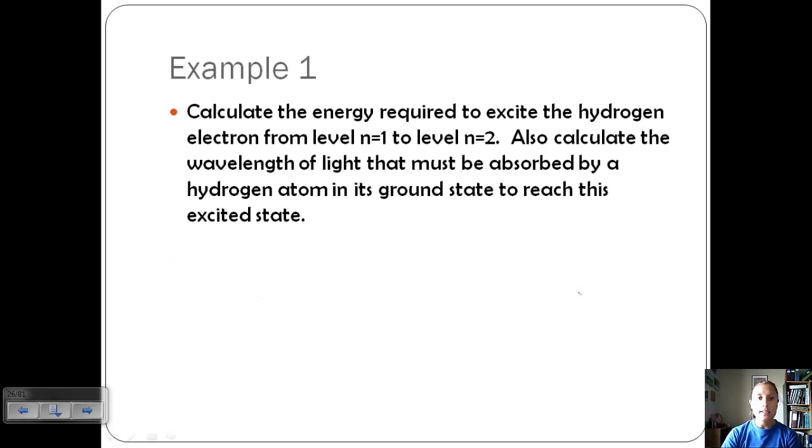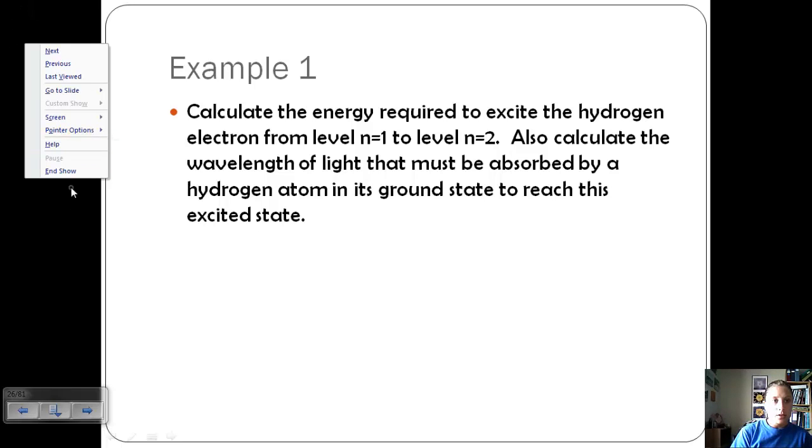Let's take a look at an example. We want to calculate the energy required to excite the hydrogen electron from level n equals one to level n equals two. And then we're going to calculate the wavelength of light that had to be absorbed by the hydrogen atom in its ground state to reach this excited state. So let's look at two parts. Let's calculate the energy first. We're going to use Bohr's equation.